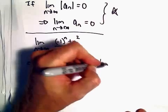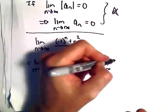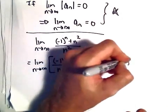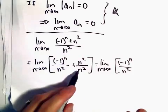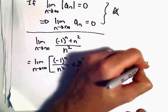So we'll have the limit as n goes to infinity of (-1)^n over n^2. Well, n^2 over n^2, that's just going to give us 1.